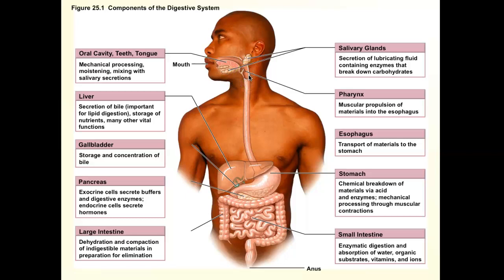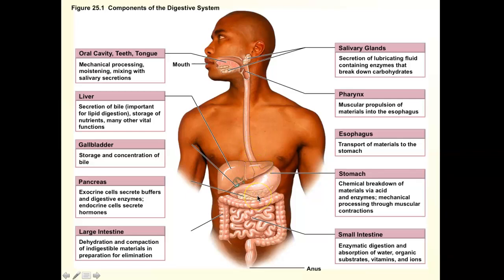There's an upper esophageal sphincter and a lower esophageal sphincter. The lower pharyngeal constrictor muscle acts as the upper esophageal sphincter, squeezing and propelling the food into the esophagus. The lower esophageal sphincter — also called the cardiac sphincter — is a thickened portion of the esophageal wall. It's called the cardiac sphincter because the first region of the stomach just three centimeters below is called the cardiac region.